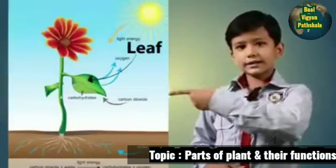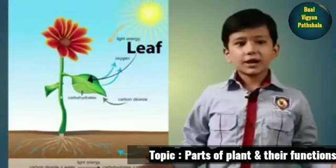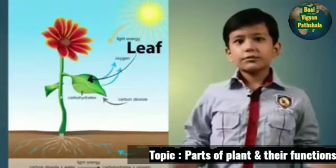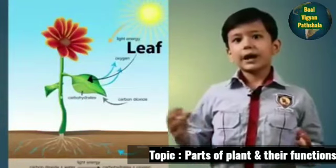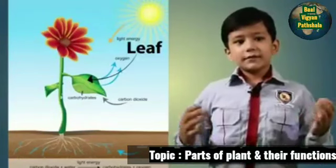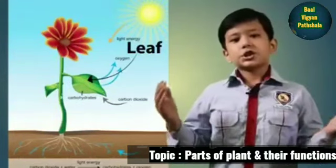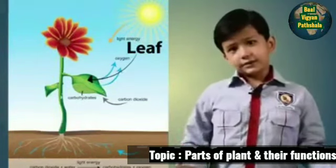The third part is leaf. Leaf makes food for the plant. Leaf is called the kitchen of the plant.